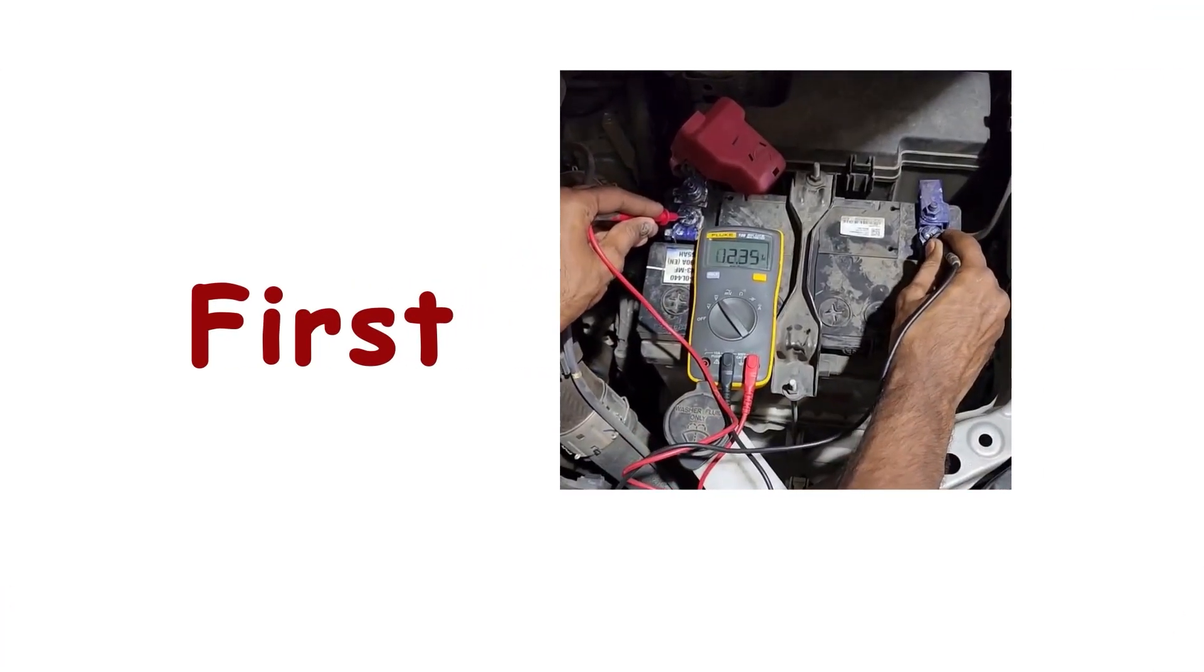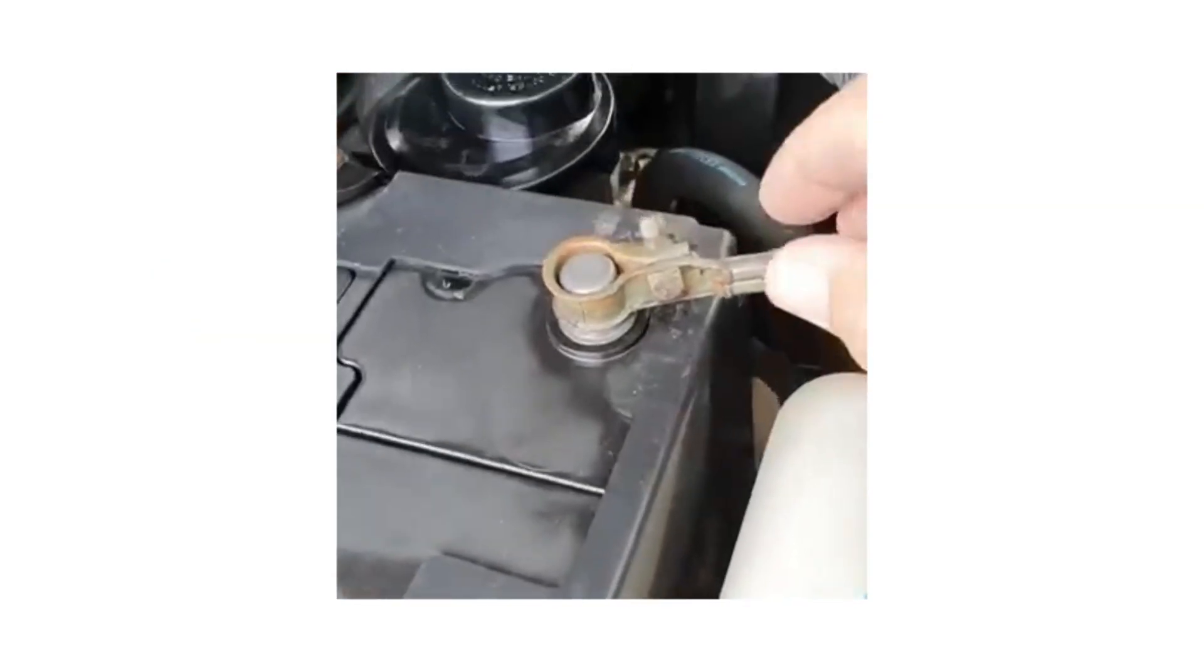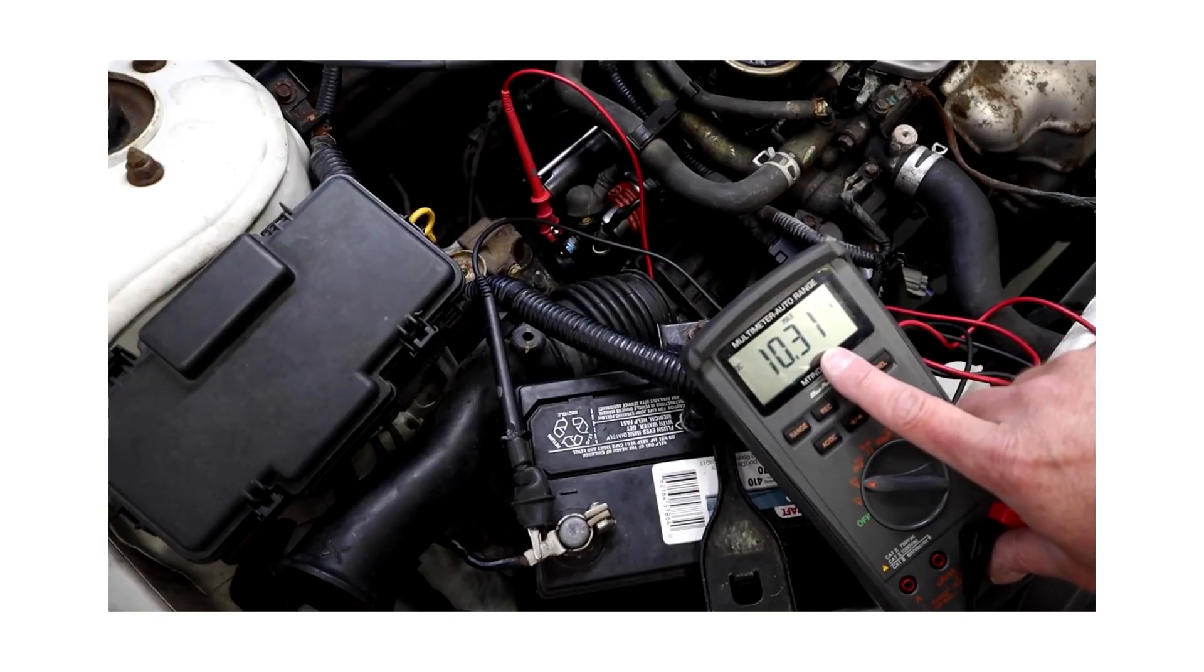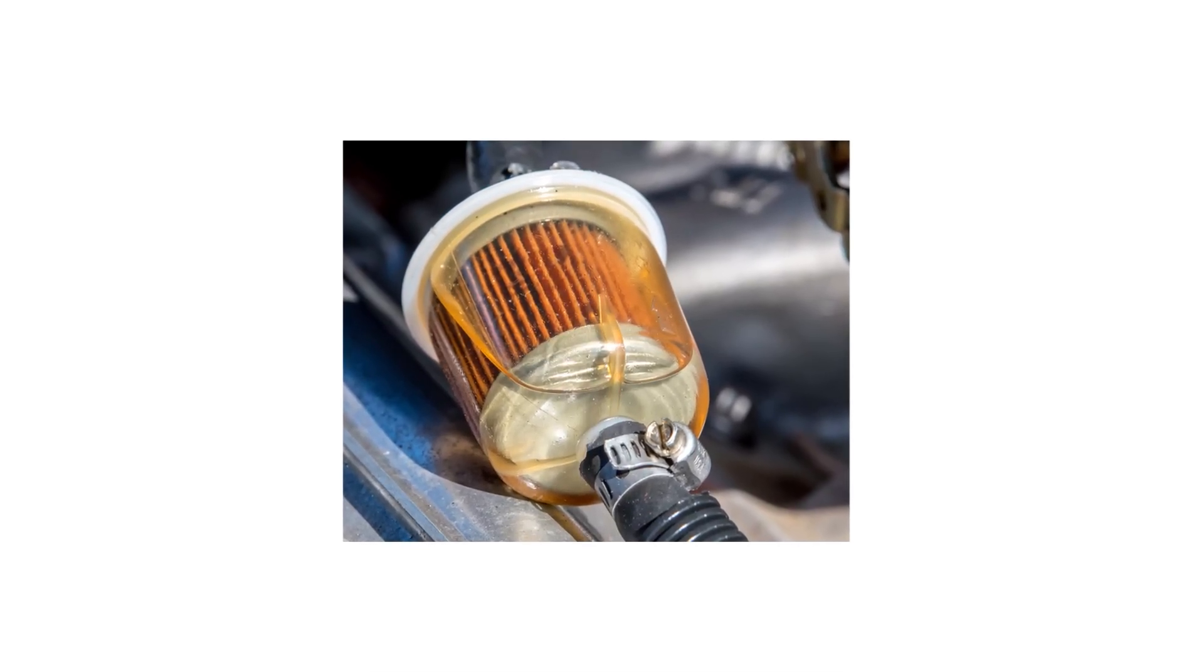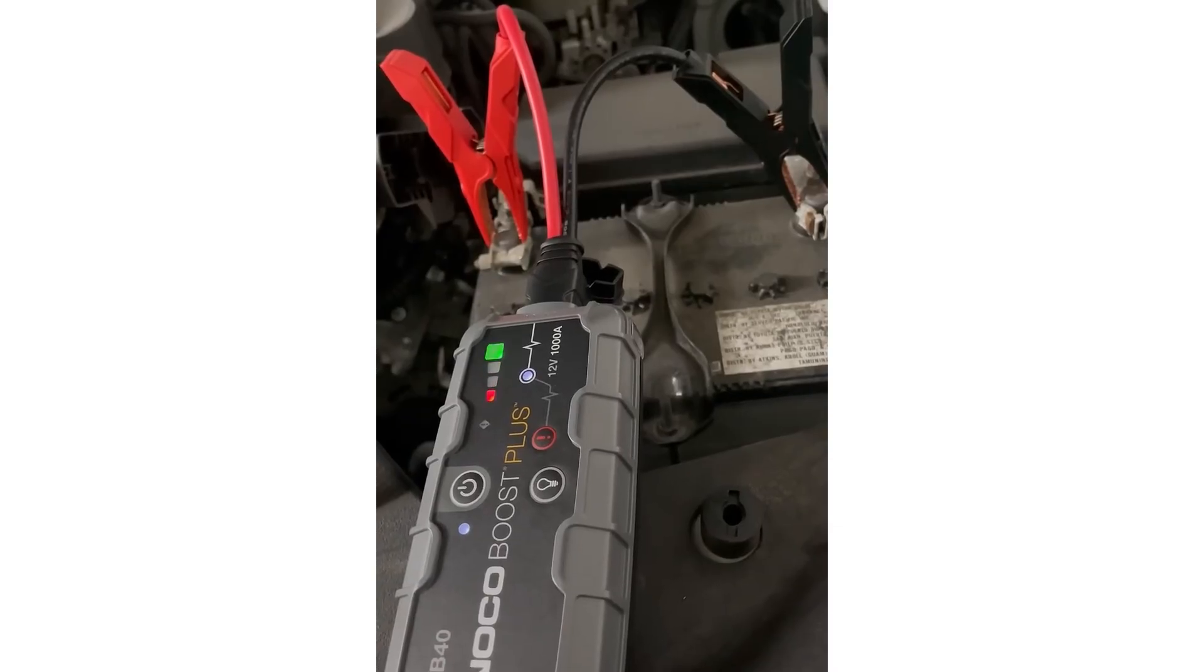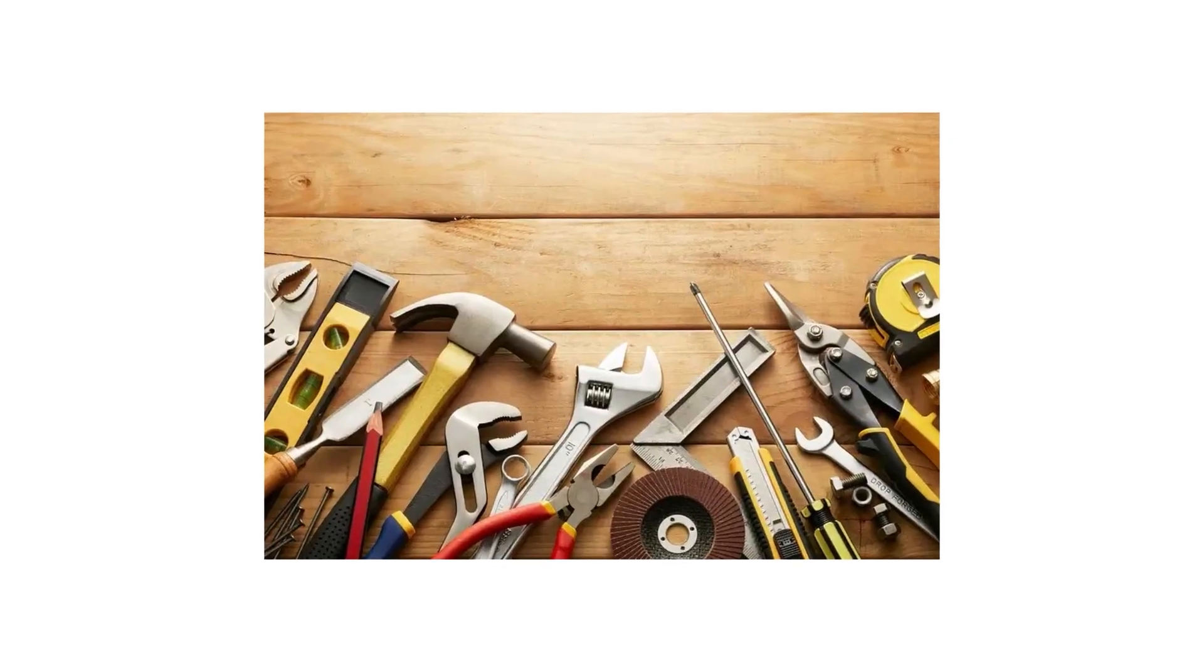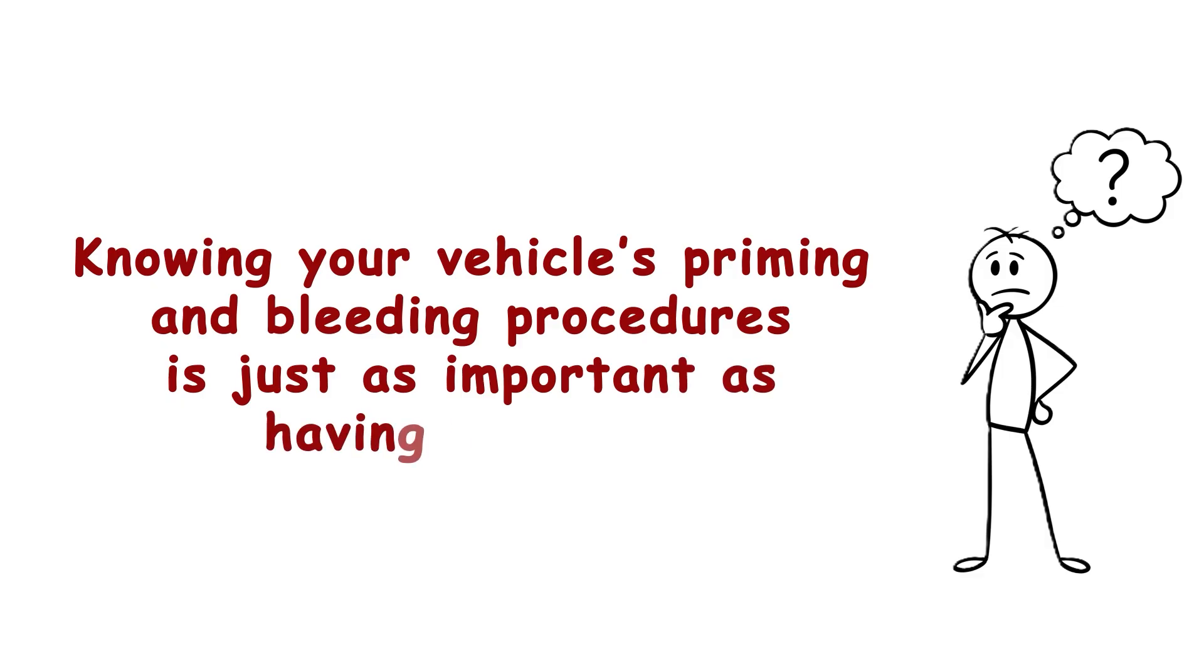Don't try repairs you're not equipped for. Always carry a winter field kit with spare fuel filters matched to vehicle specifications, a filter wrench, a small quantity of pretreated diesel and measured anti-gel doses, a robust portable booster pack or cold-rated jumper cables, a quality multimeter, and basic hand tools for fueling and filter access. Knowing your vehicle's priming and bleeding procedures is just as important as having the parts.